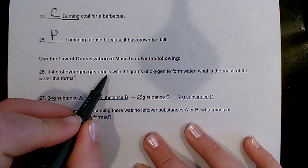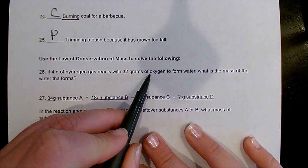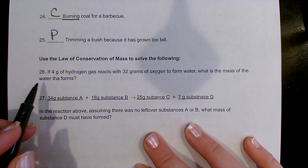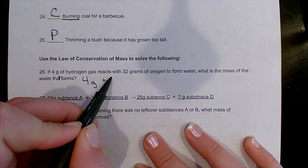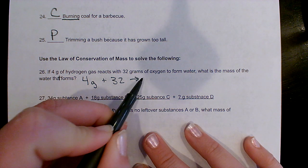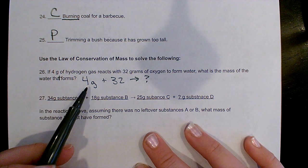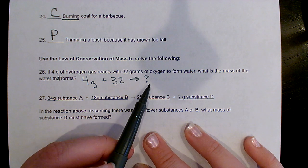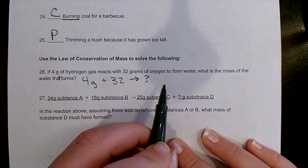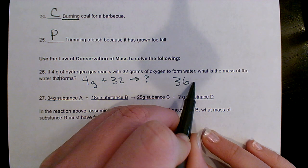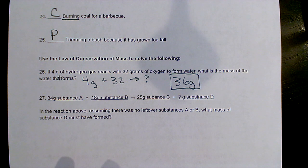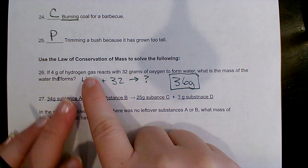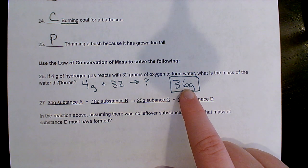4 grams of hydrogen gas react with 32 grams of oxygen to form water. What is the mass of the water that forms? This one is really this simple — I have these two things reacting together and I'm only making one substance, so I have to have made 36 grams of water, because the law of conservation of mass says I can't have any more or less stuff at the end than I started with.